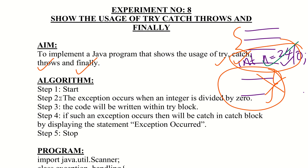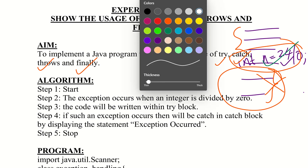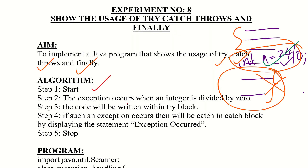Now let's explain the algorithm. Step 1: start. Step 2: an exception occurs when an integer is divided by zero. Step 3: the exception-generating code is written within the try block. Step 4: if an exception occurs, it is caught in the catch block, displaying the message 'exception occurred'. Step 5: stop.